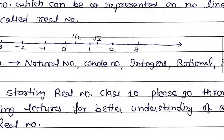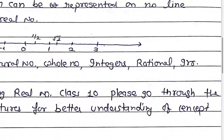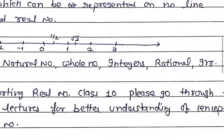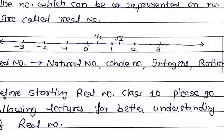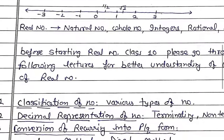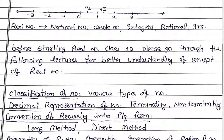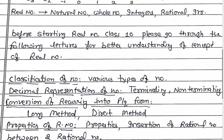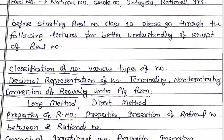So finally, real number kin kin ka group ho gaya? Ye natural numbers, whole numbers, integers, rational numbers, and irrational numbers — in sabi ka merge jo hai, woh real number ho gaya. Real numbers humare Class 10th ka pehla chapter hai, which is an important chapter from exam point of view as well as NTSC point of view.